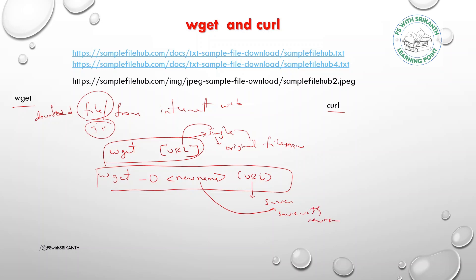With wget you can also download multiple files. The syntax is: wget [url1] [url2] and so on — any number of files you can download, either with their original names or with new names.